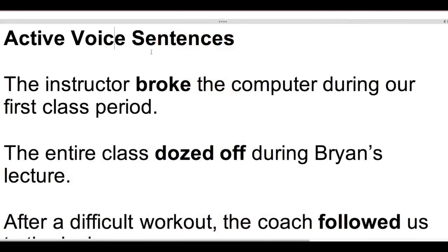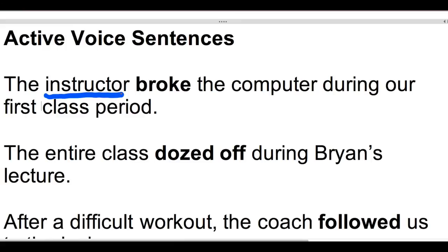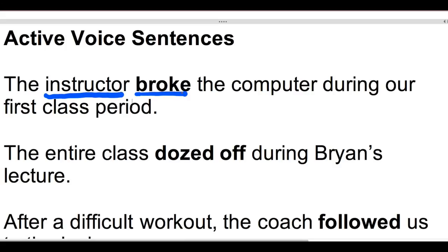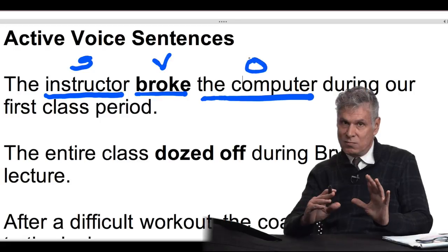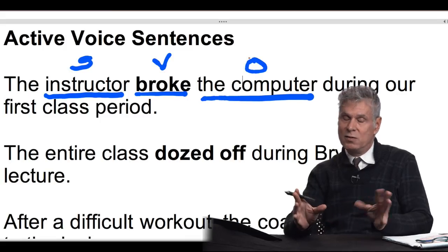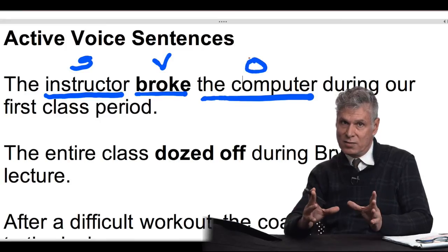So what do I mean by word order? In the normal English sentence, we have the subject — the instructor — and we have the verb — broke — and then we have the object. What did the instructor break? So I'll write S for subject, V for verb, and O for object. That's how most English sentences are. And if you study different languages, the verb and subject are in different places. So this is very particular to English.